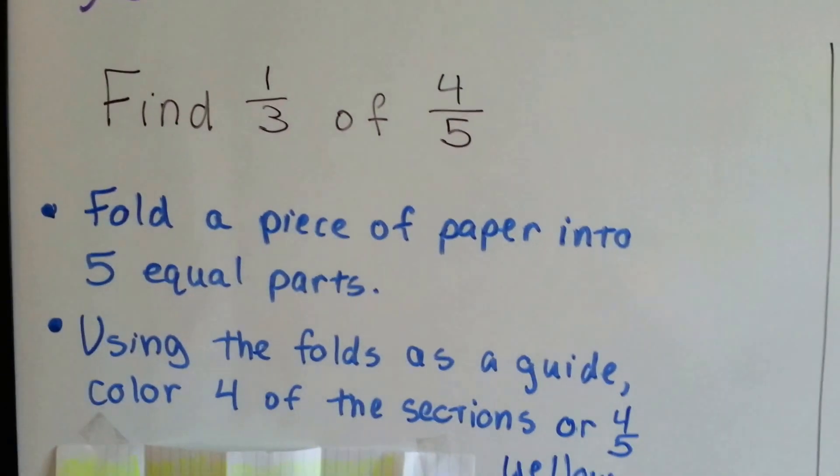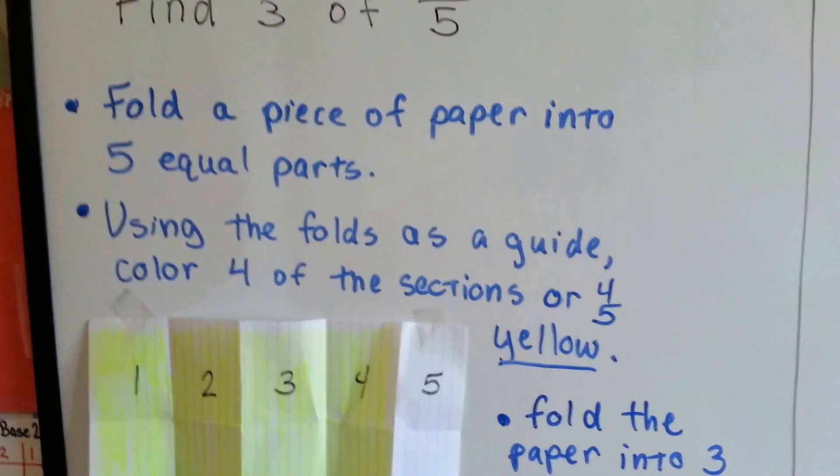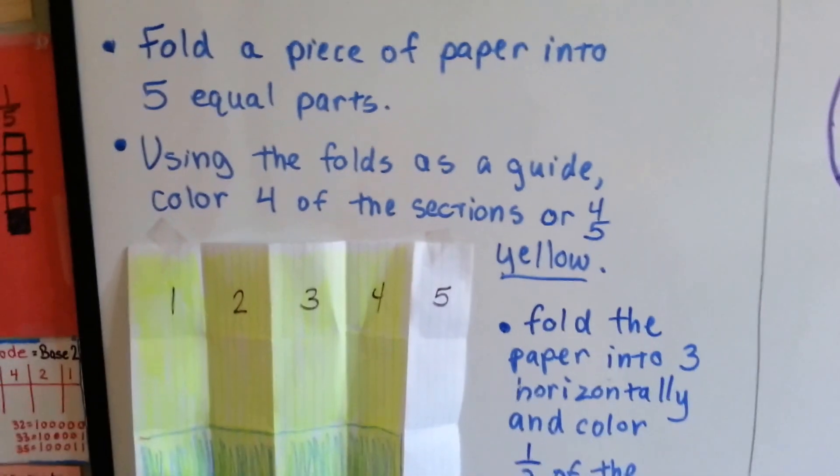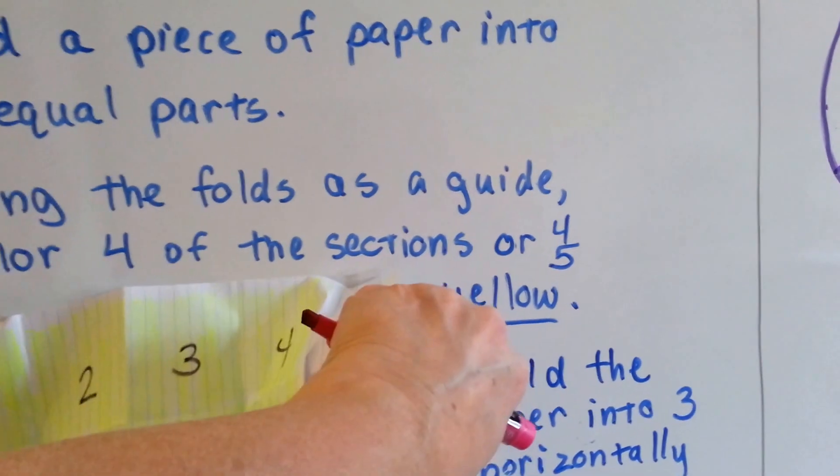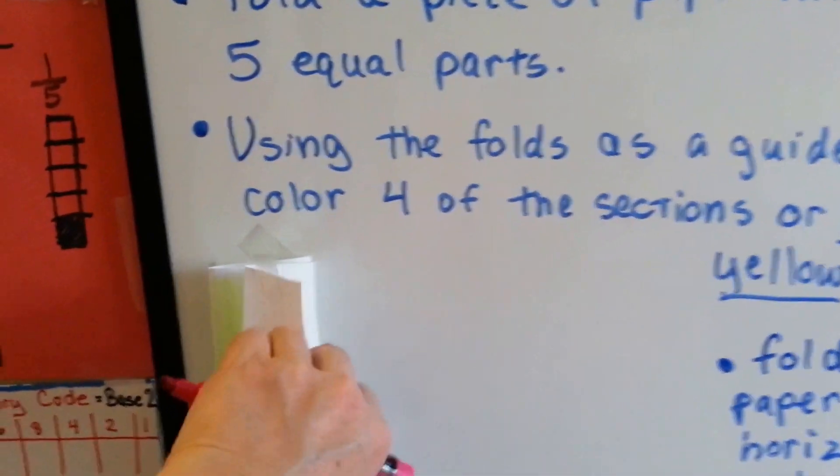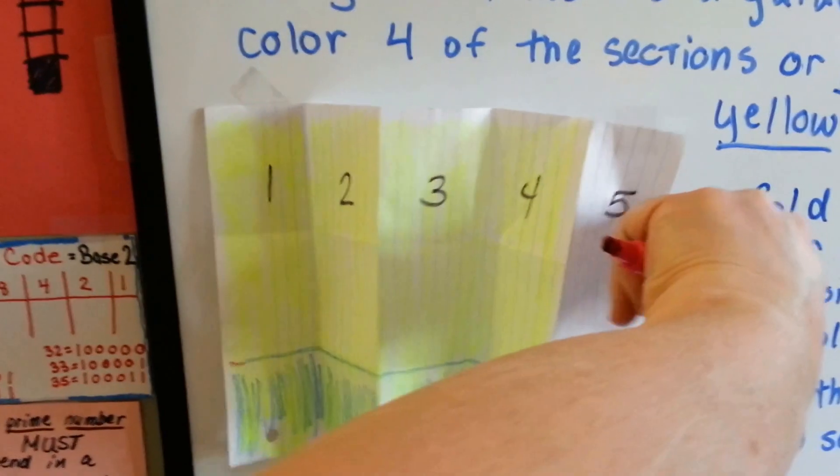So to find 1 third of 4 fifths, what we can do is fold a piece of paper into 5 equal parts. What I did was, I took a piece of paper and folded it into 5 equal parts.